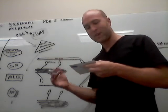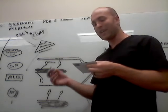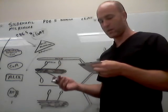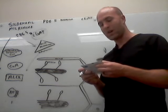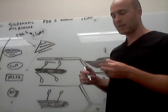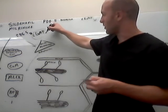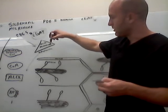As phosphodiesterase-5 inactivates cyclic GMP, phosphodiesterase-5 inhibitors lead to an increase in cyclic GMP via a decrease in degradation. Increased cyclic GMP leads to dephosphorylation of myosin light chain. So if you have more cyclic GMP, you're going to have more dephosphorylation of myosin light chain.